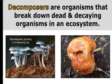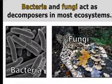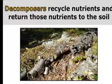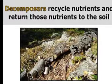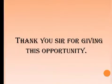Decomposers are organisms that break down dead and decaying organisms in an ecosystem. Bacteria and fungi act as decomposers in most ecosystems. Decomposers recycle nutrients and return those nutrients to the soil. The decomposers bring the nutrients back to our soil when they are decomposing. We often do not include decomposers in a food chain or food web, but decomposers are an important part of every ecosystem. Thank you for giving this opportunity.